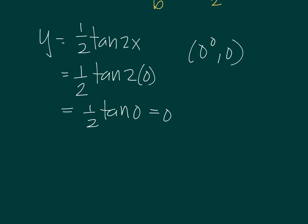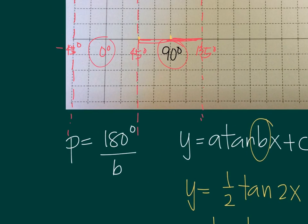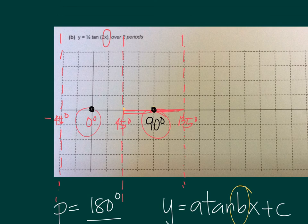So when it is 90, y is equal to one-half tangent of two times 90, so this is equal to one-half tangent of 180, then you can use your calculator to find that, so this is equal to zero as well. So you have 90 degrees and then zero, so just plot these two points, so when it is zero, it should be zero, when it is 90, it's also zero. And then carefully, just create a graph passing through the points, and then following the asymptotes over two periods.